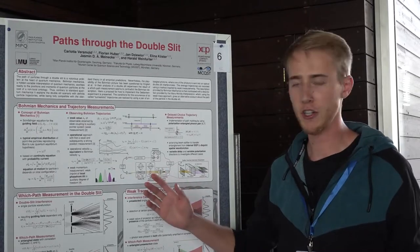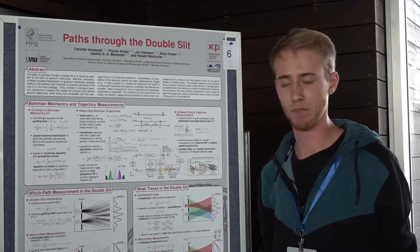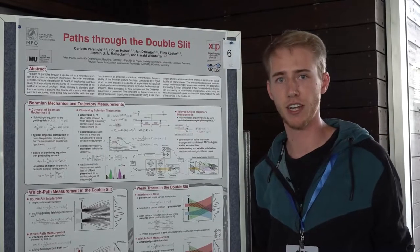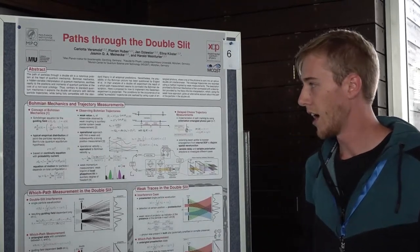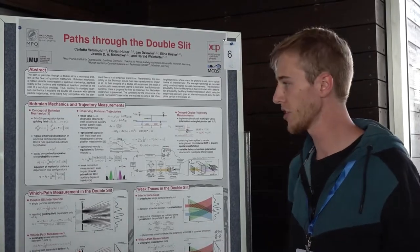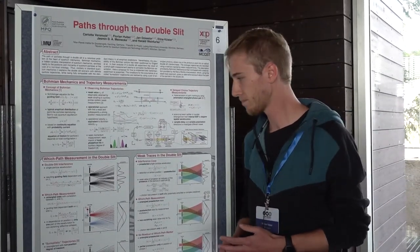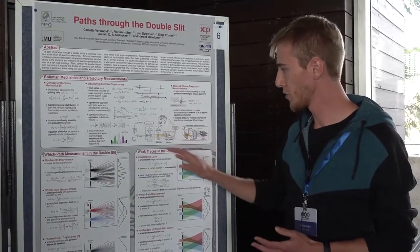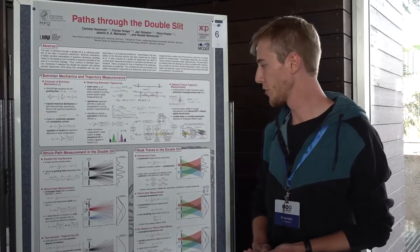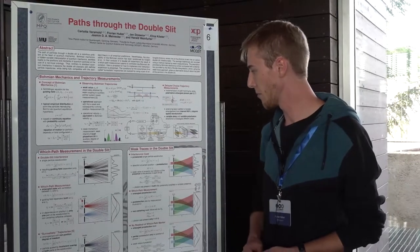A few words about Bohmian mechanics: it is a non-local hidden variable theory which is empirically completely equivalent to standard quantum mechanics. However, the hidden variable in Bohmian mechanics is the position, and this allows Bohmian mechanics to draw trajectories. We want to detect these in our setup, and we are doing the reconstruction of the Bohmian trajectories by weak measurement.